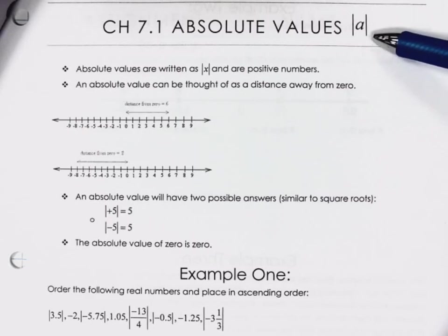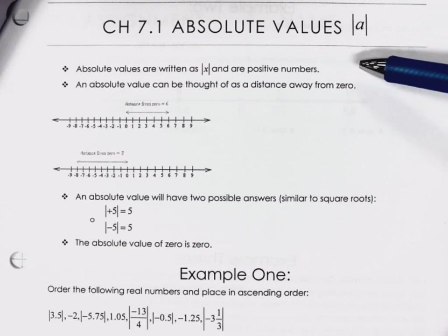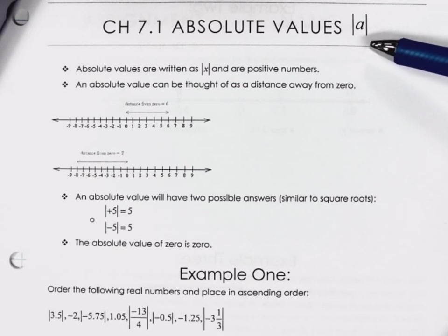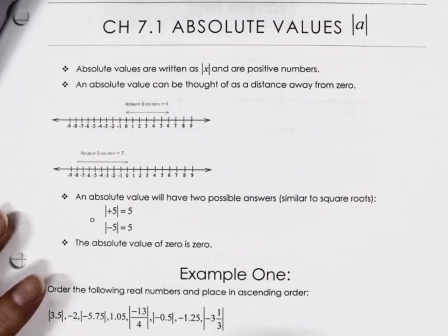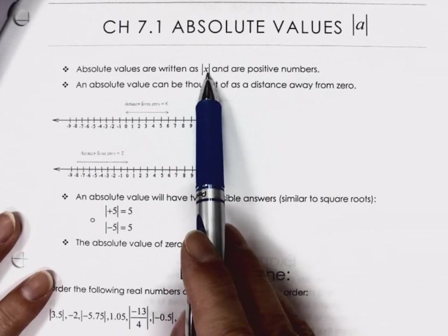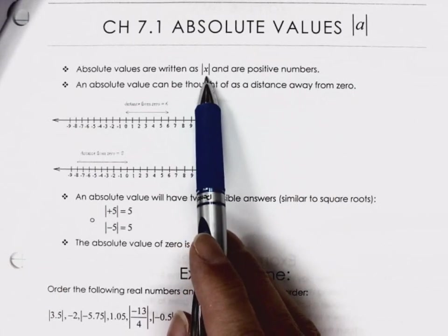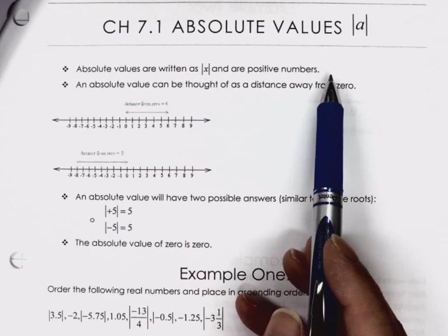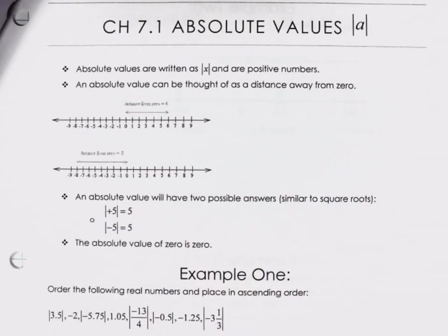Absolute values are a certain type of bracket — they are an actual bracket and we treat them in order of operations like a bracket. But they also have another purpose: they negate, they take away any negative. So if I'm trying to find the absolute value of X, I know the answers can only be positive numbers.